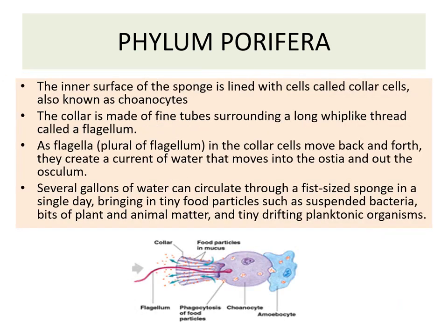The inner surface of the sponge is lined with collar cells, also known as coanocytes. The collar is made up of fine tubes surrounding a long whip-like thread called the flagellum. As flagella in the collar cell move back and forth, they create a current of water that moves into the ostia and out the osculum. Several gallons of water can circulate through a fist-sized sponge in a single day, bringing tiny food particles such as suspended bacteria, bits of plants and animal matter, and tiny drifting planktonic organisms.